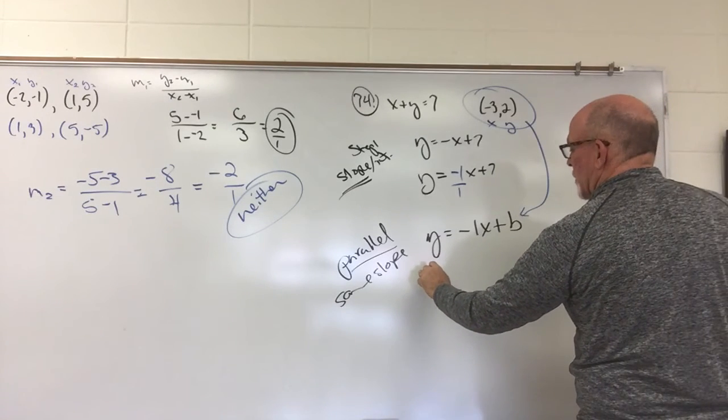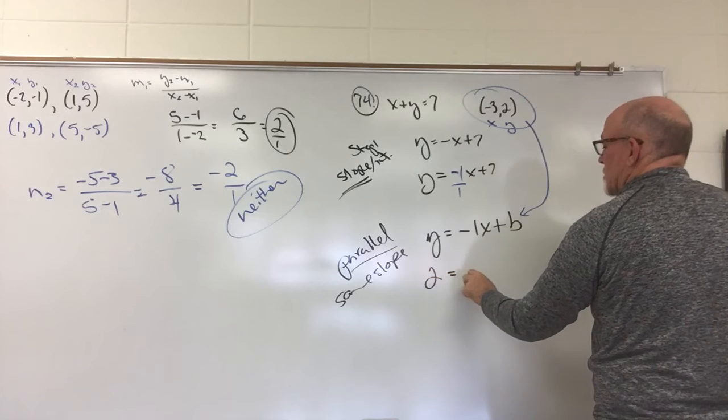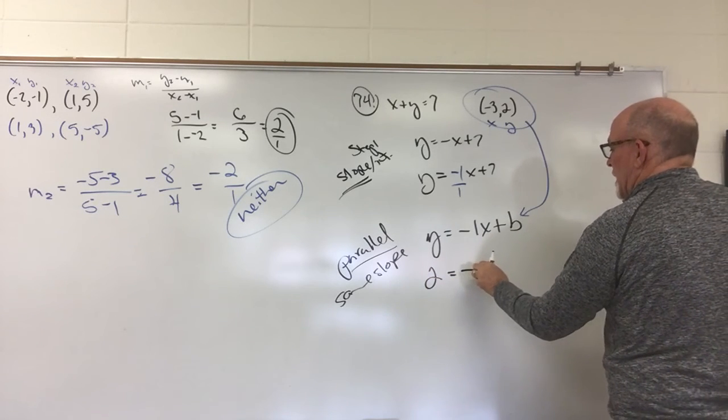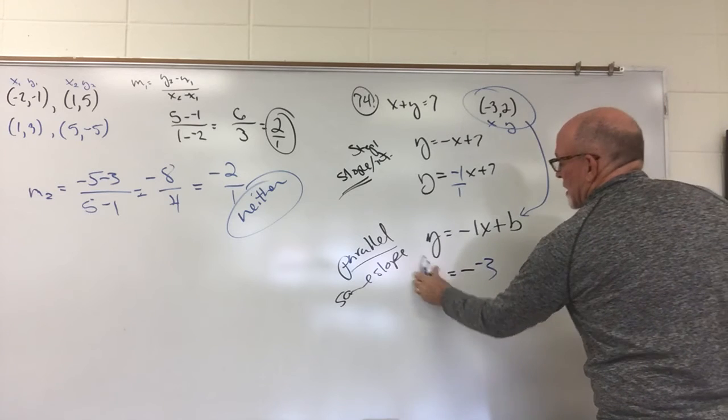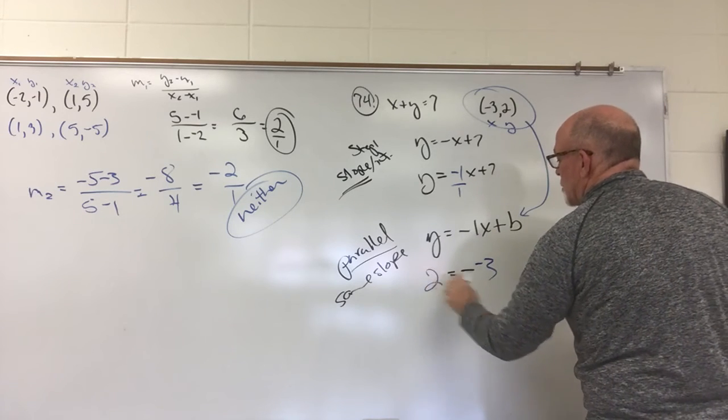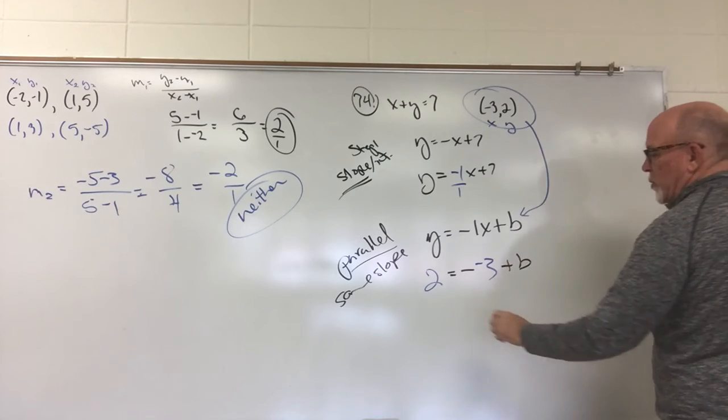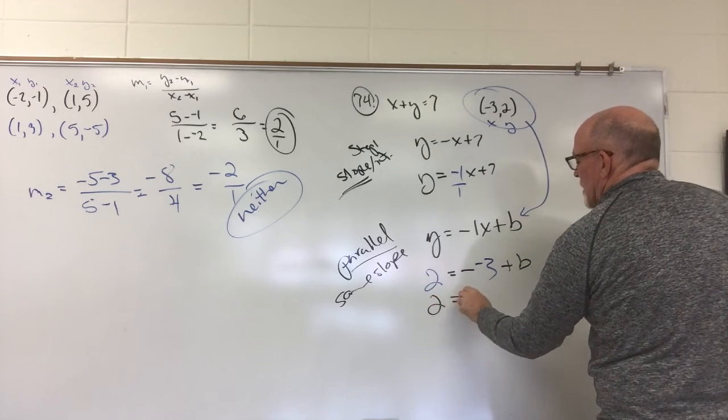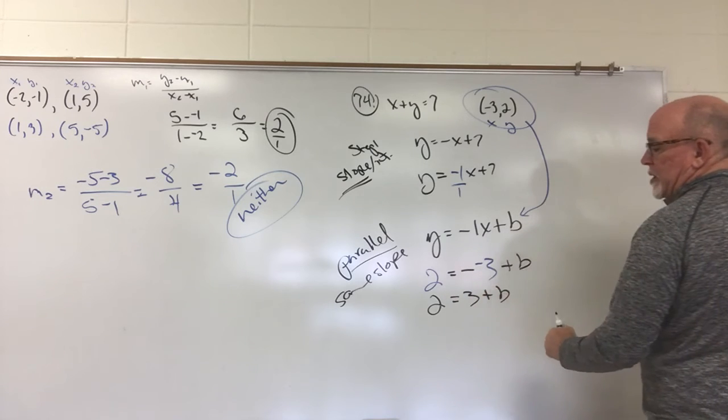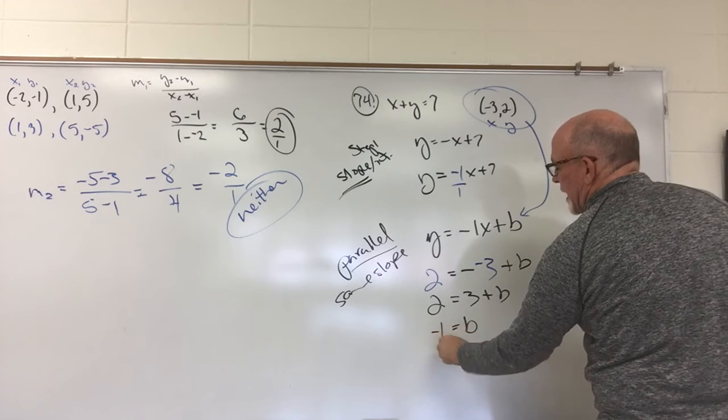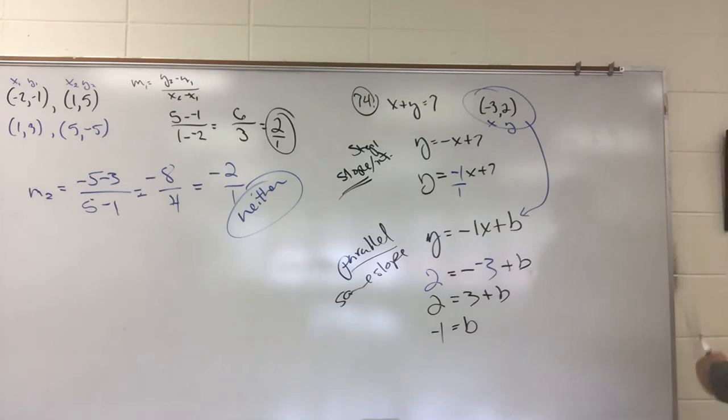So, for y, I'm going to plug in 2 equals a negative 1x. And, then we'll put in negative 3 for x. So that was 2 for y, negative 3 comma 2, and then plus b. And, we're going to figure out what b is. 2 equals a positive 3 plus b. When we subtract 3 from both sides, b should be equal to negative 1, in the case where it is parallel.